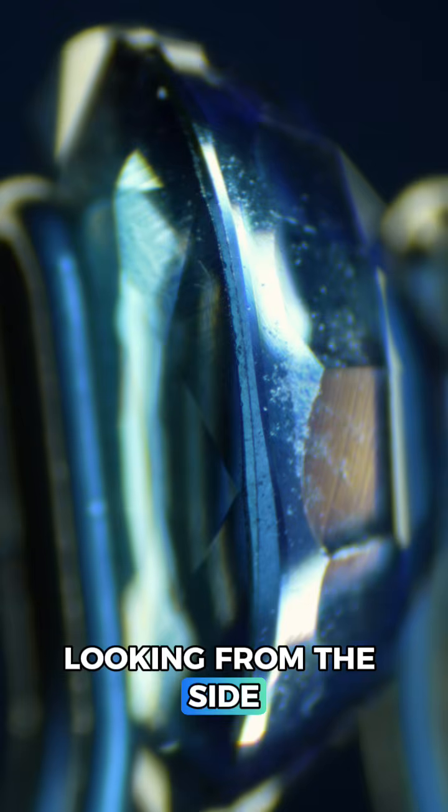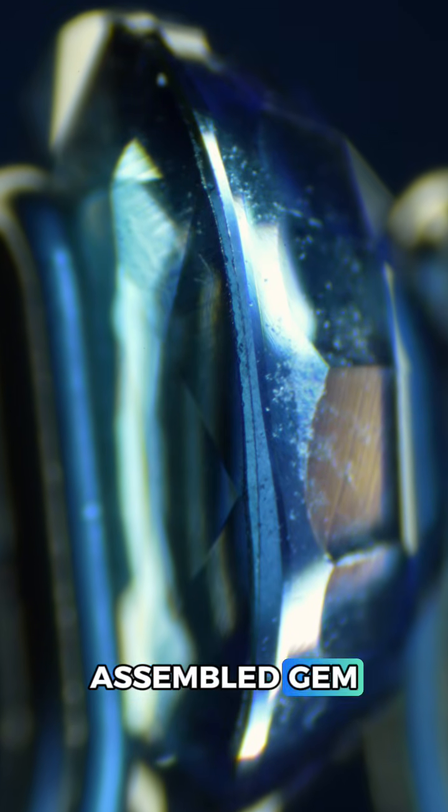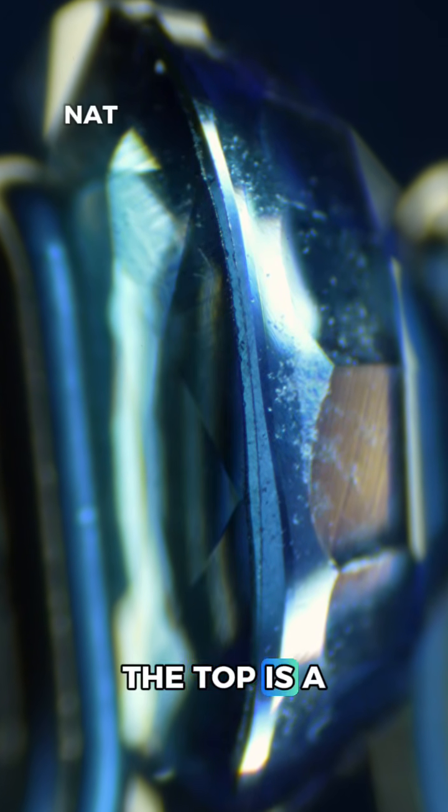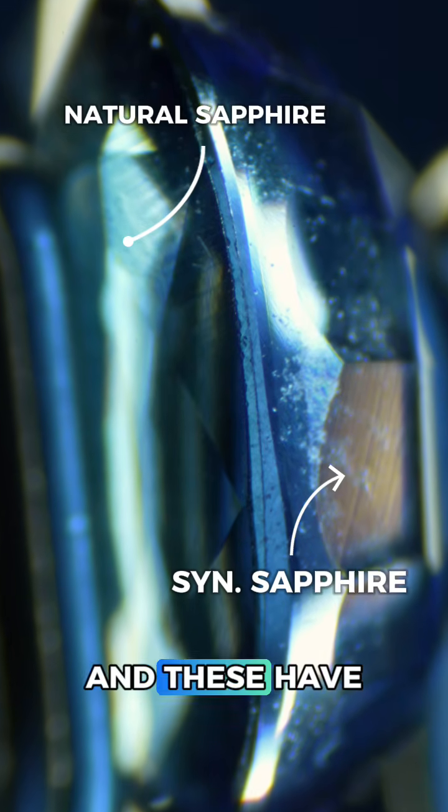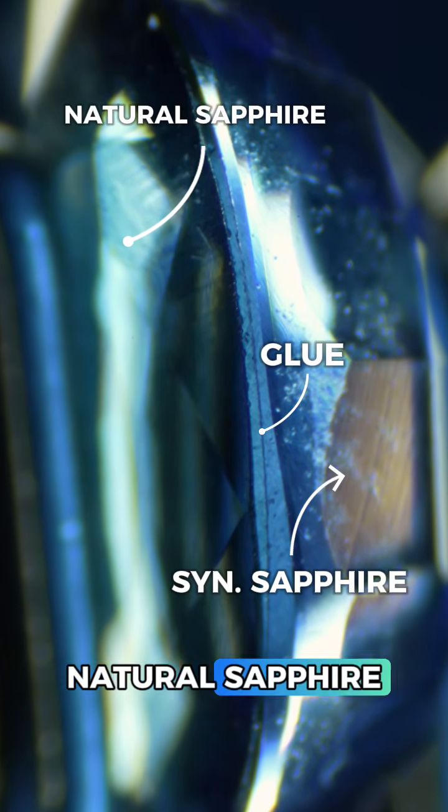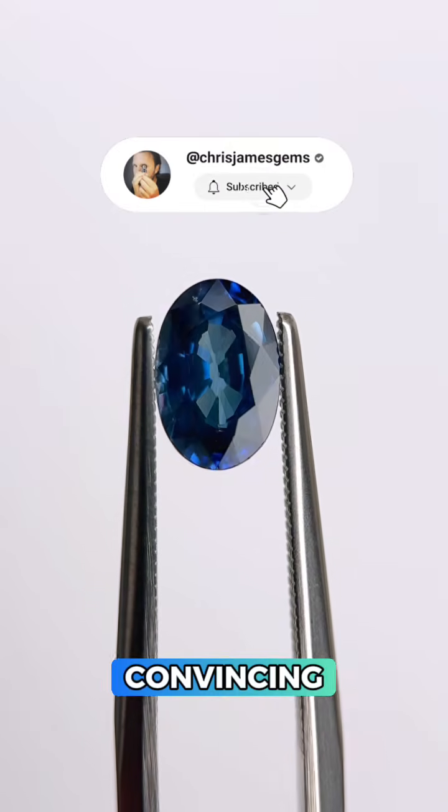So what's going on here? Looking from the side you can see this is an assembled gem also called a doublet. The top is a thin slice of natural green sapphire, the bottom is a synthetic sapphire and these have been glued together to give the illusion of a solid natural sapphire. And I must say it can look very convincing.